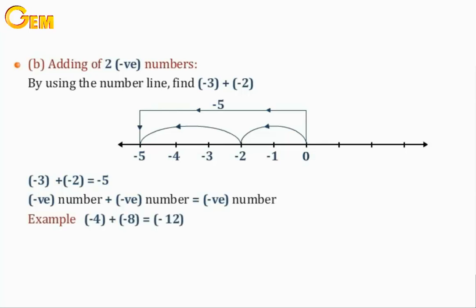Examples: negative 4 plus negative 8 equals negative 12. Negative 7 plus negative 3 equals negative 10.